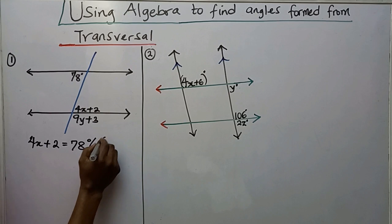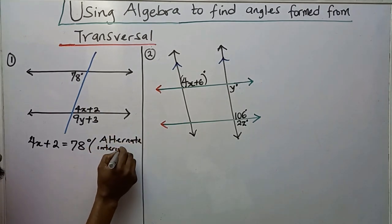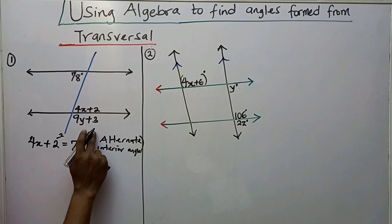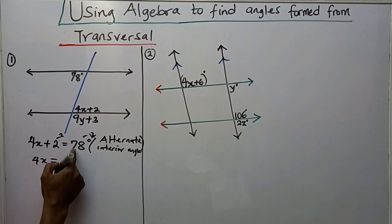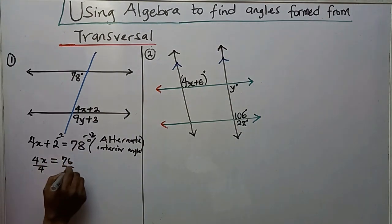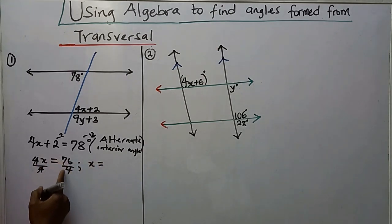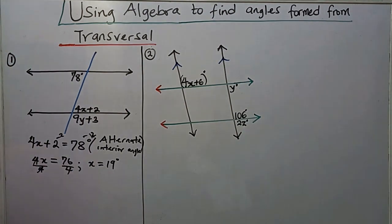The geometric reason is alternate interior angles. Now I'm going to subtract 2 from both sides, so 4X equals 78 minus 2, which gives me 76. Dividing both sides by 4, X equals 76 divided by 4, which gives me 19 degrees. So X is 19 degrees.